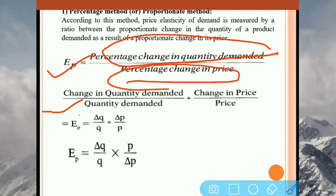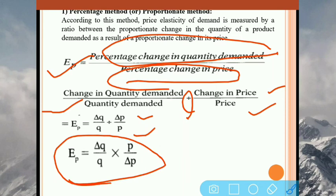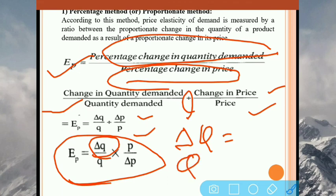Percentage change in price is change in price divided by original price. So the formula simplifies to: delta Q upon Q, divided by delta P upon P. Simplifying further, price elasticity of demand equals delta Q upon Q, multiplied by P upon delta P. Here delta Q indicates change in demand — that is new demand minus old demand. Q indicates original demand. P indicates original price. And delta P indicates change in price, that is new price minus old price.